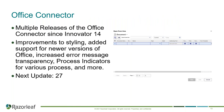There have been multiple releases of the Office Connector since Innovator 14. In quick summary: improvements to styling, added support for newer versions of Microsoft Office, error message transparency, added indicators for various processes, and quite a bit more functionality. If you're curious about those, please go back and watch some of our previous Tech Tuesdays for a more detailed breakdown. The next update to the Office Connector is also looking to be within Innovator 27.